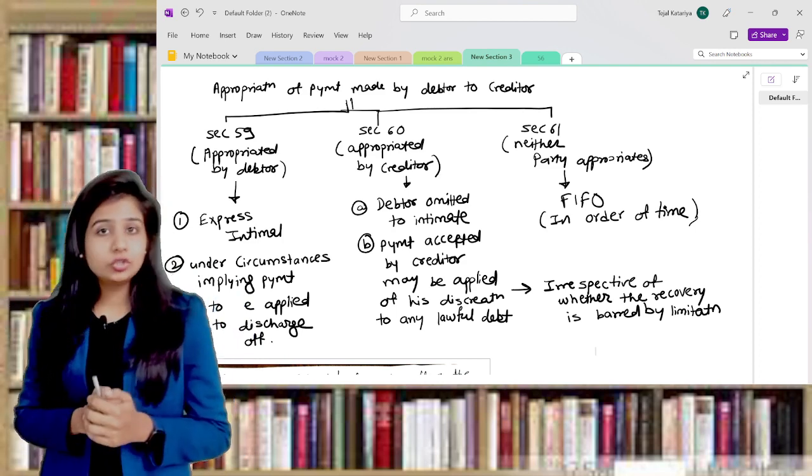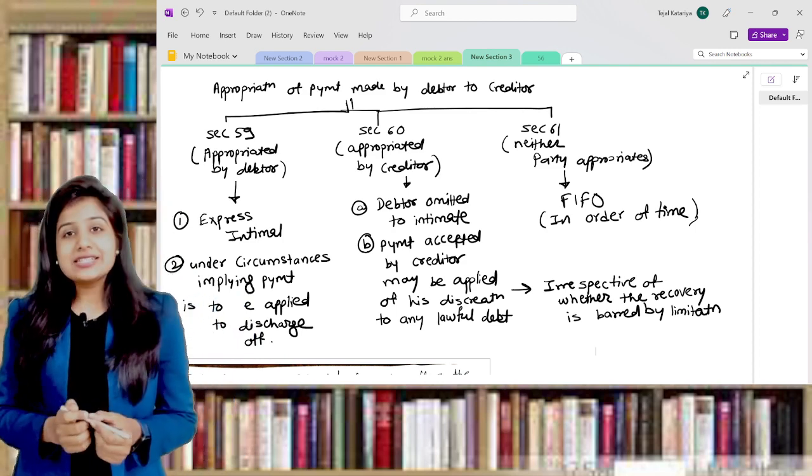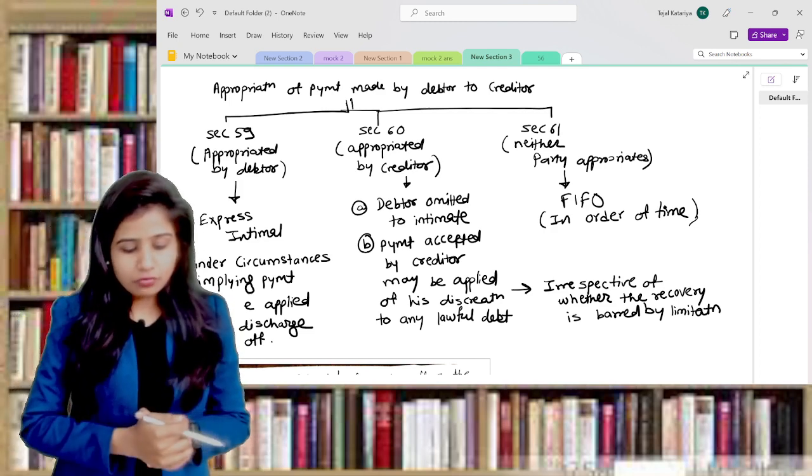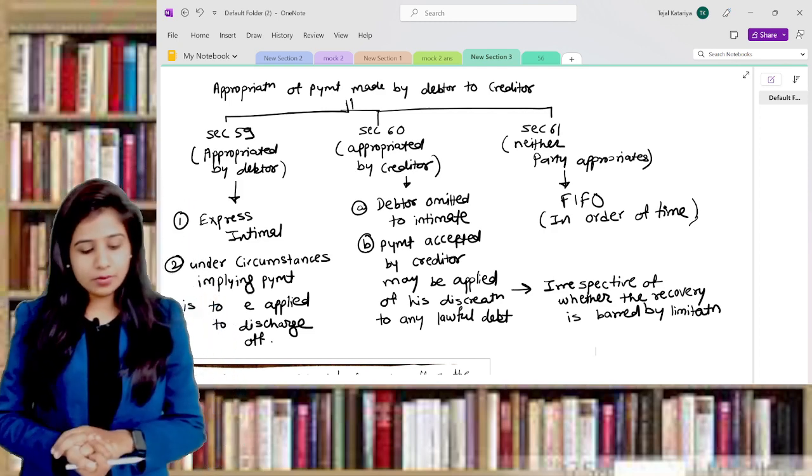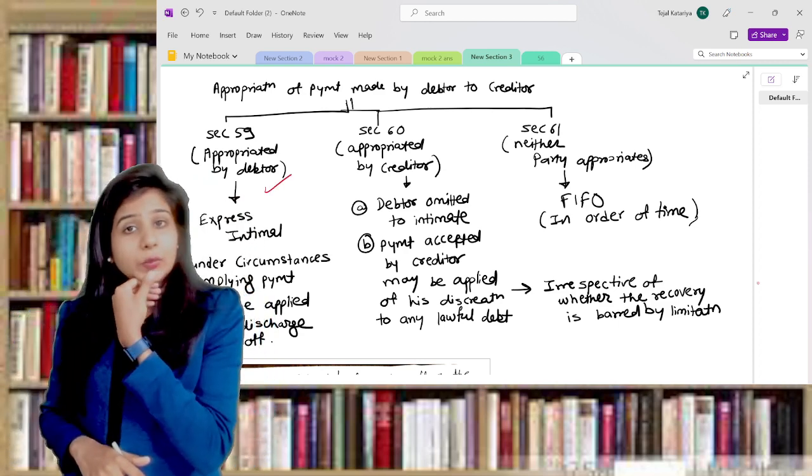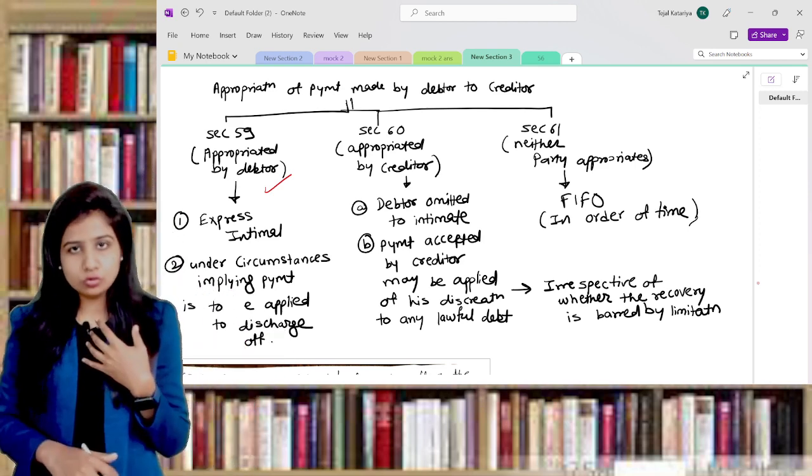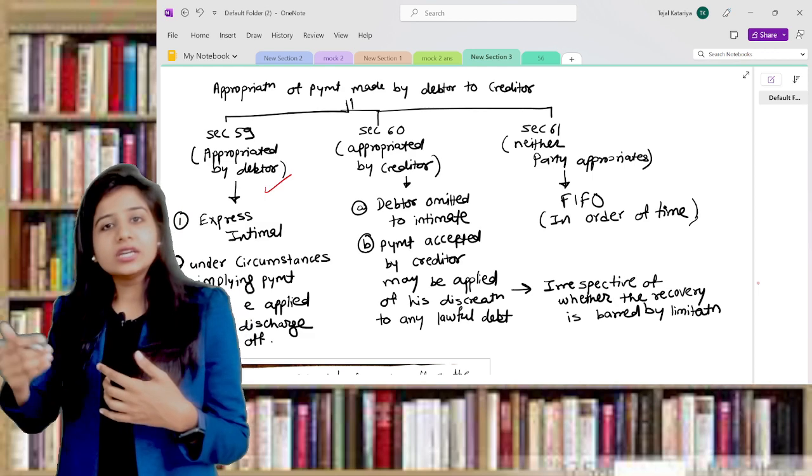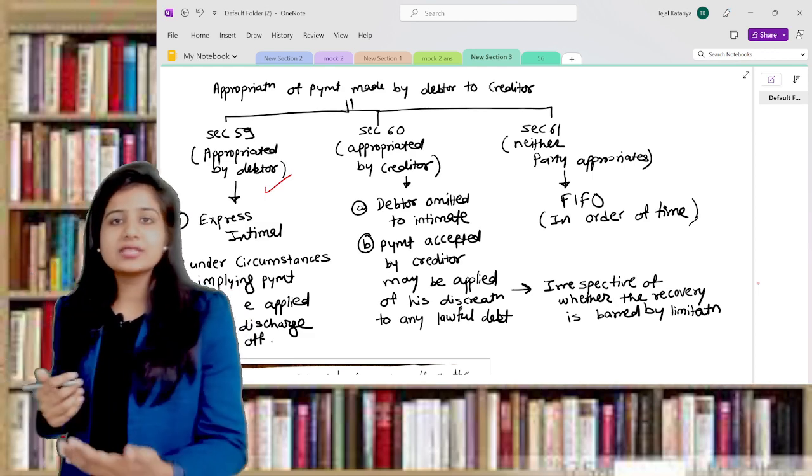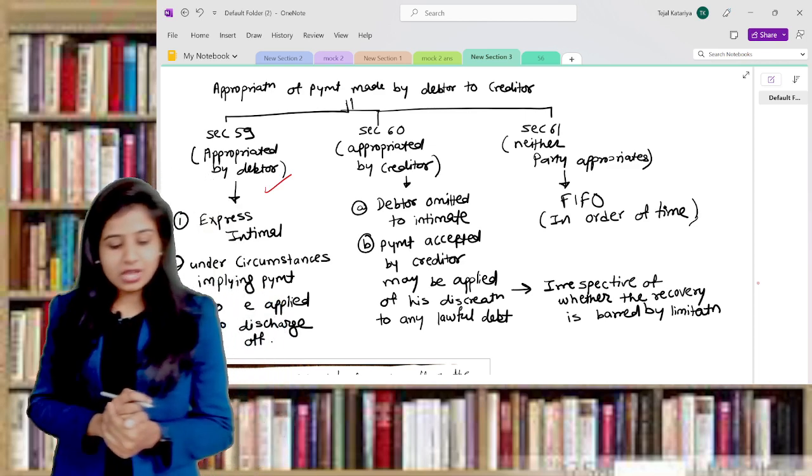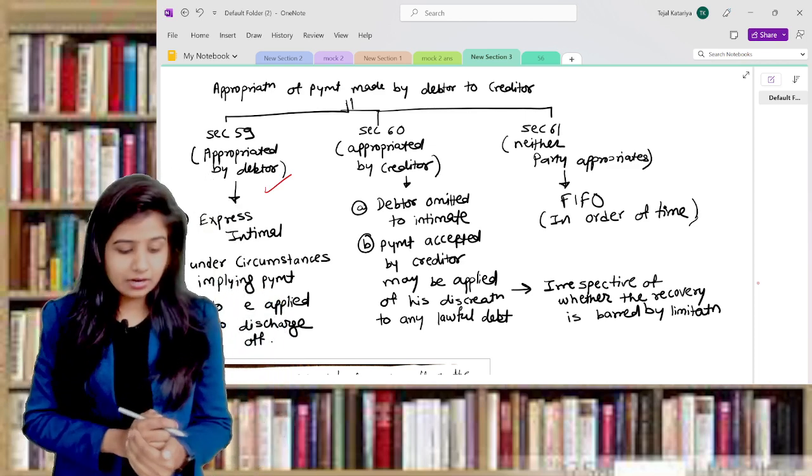So let's start with lots of energy without wasting time. Understand first of all, according to section number 59, appropriation by debtor - these sections are applicable when someone is making payment to you and then you have to appropriate it against the number of transactions which you have done earlier. If we are talking about section number 59, appropriation by debtor, that means debtor while making a payment himself is saying that you should appropriate against this payment or that payment.